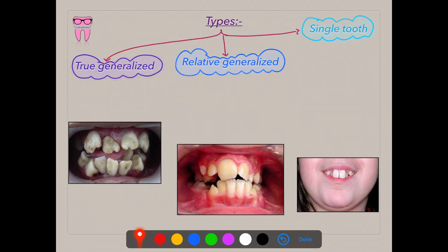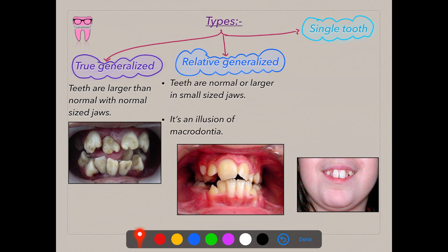The types of macrodontia are true generalized macrodontia, relative generalized macrodontia, and single tooth macrodontia. True generalized macrodontia involves teeth larger than normal with normal jaw size, characteristically seen in pituitary gigantism. Relative generalized macrodontia is an illusion of macrodontia where the jaw is abnormally small — micrognathia — which is a characteristic feature of cleidocranial dysplasia and Pierre-Robbins syndrome.